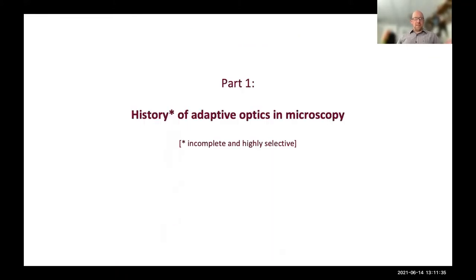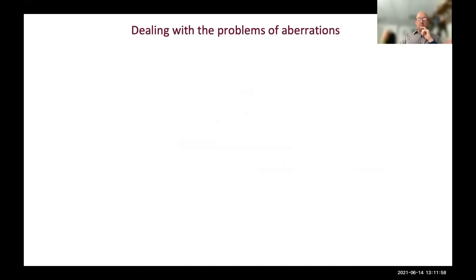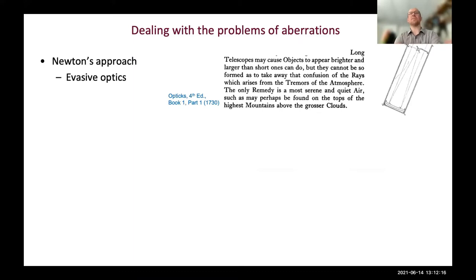The first part of my talk covers the history of adaptive optics in microscopes. There are three ways we can look at dealing with aberrations. The first I'll call 'evasive optics,' going all the way back to Isaac Newton. Newton described how telescope imaging was affected by tremors in the atmosphere, and said 'the only remedy is a most serene and quiet air such as may perhaps be found on the tops of the highest mountains above the grosser clouds.'